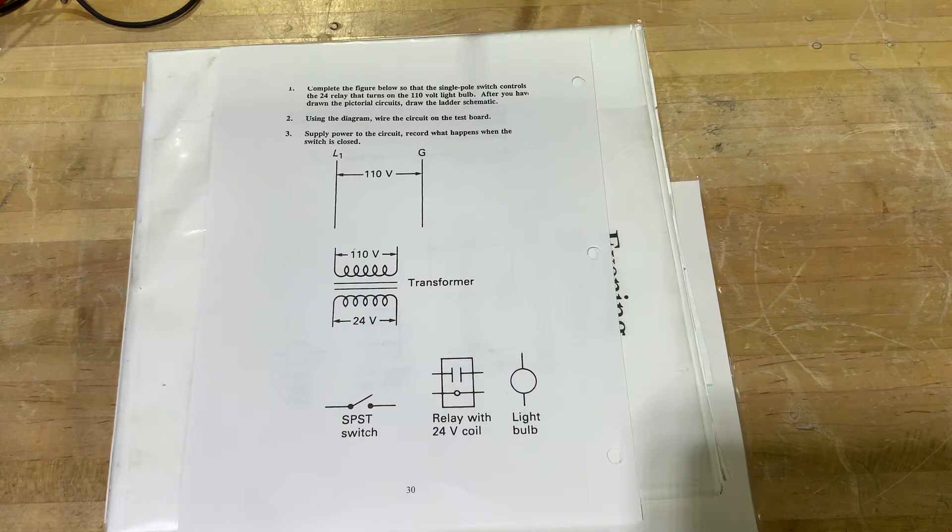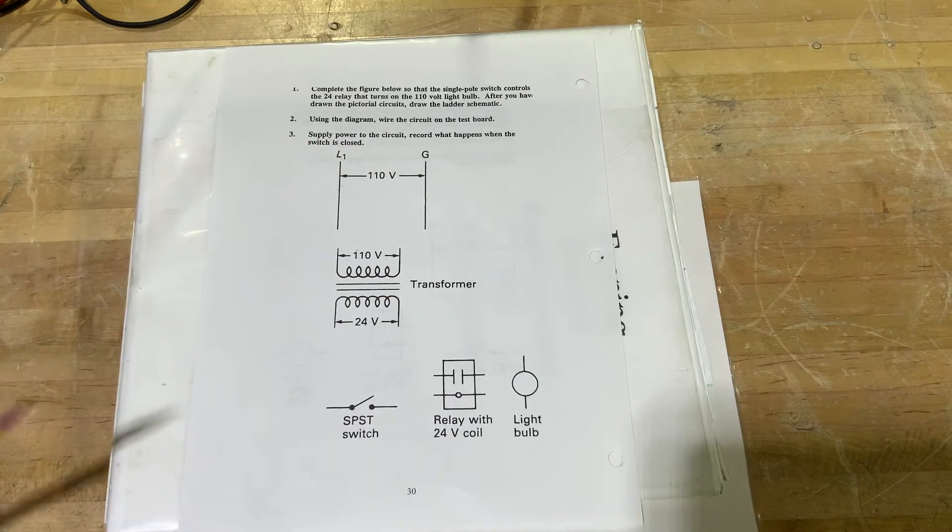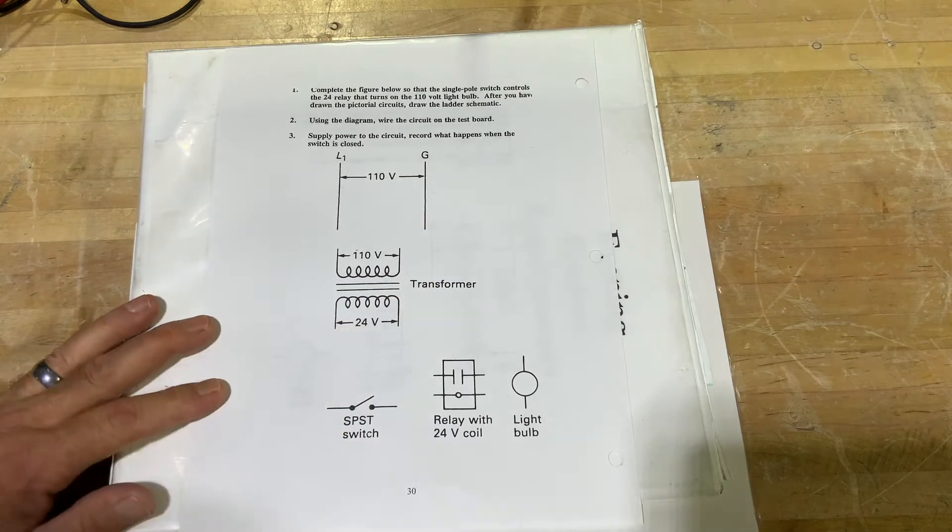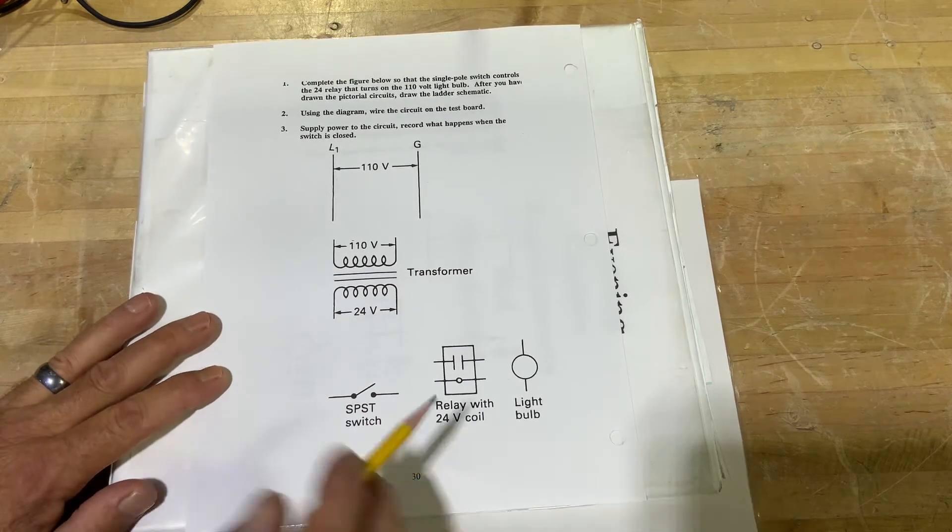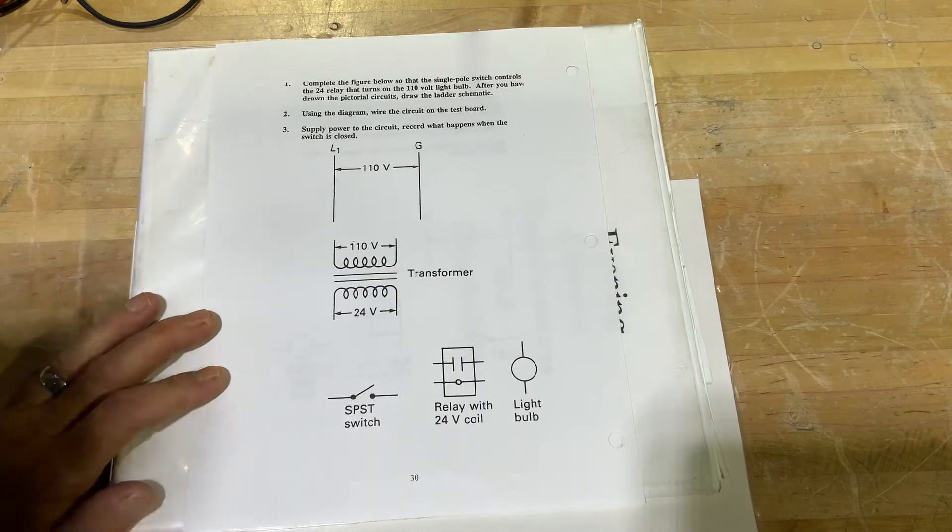Notice that we have our 110 volt power, we have our transformer with our 24 volts. So we're using a 24 volt relay for our light bulb.